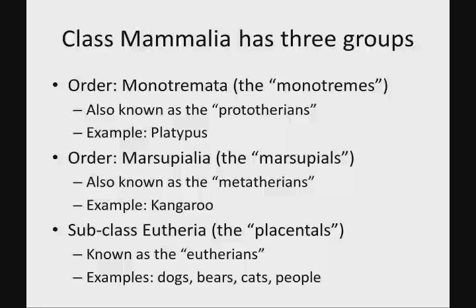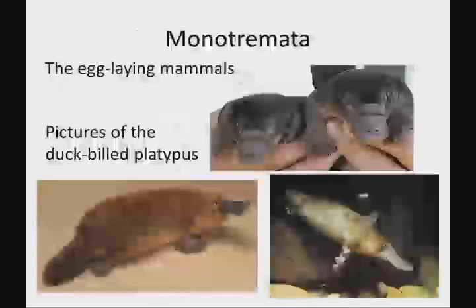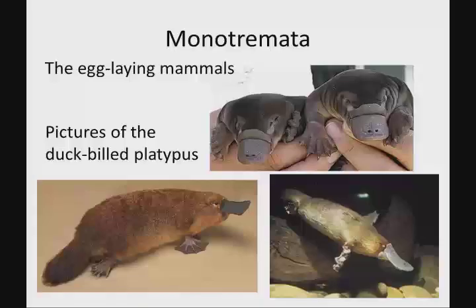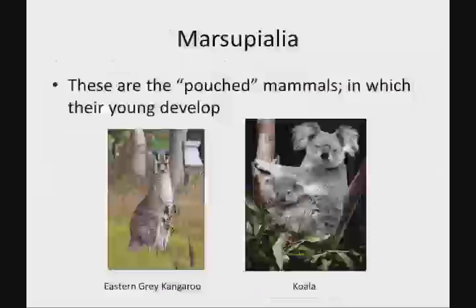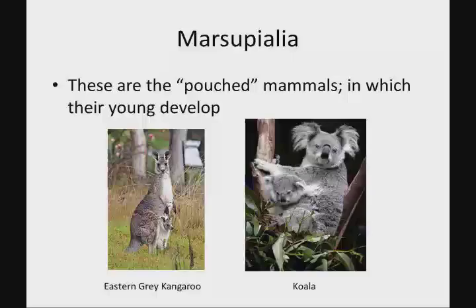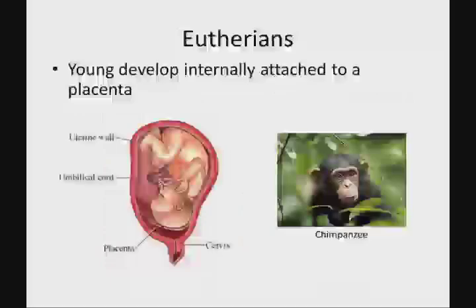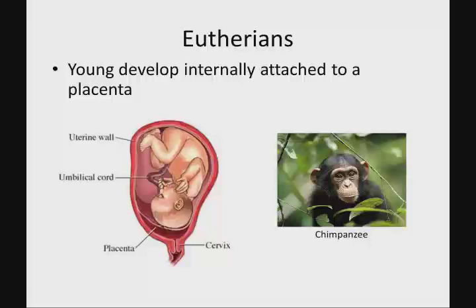Eutherians develop internally in the mother, attached to a placenta. You can see the monotremata — the egg-laying duck-billed platypus — incredibly unusual but very cool animals. The marsupials are the pouched mammals; Australia has a tremendous diversity of marsupials, including the kangaroo and koala. And the eutherians are those whose young develop internally attached to a placenta.